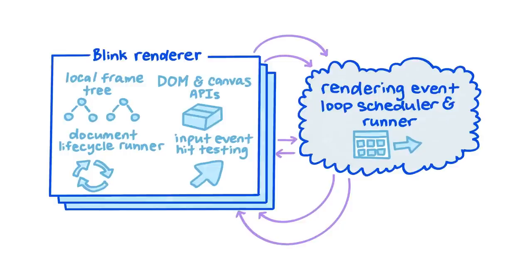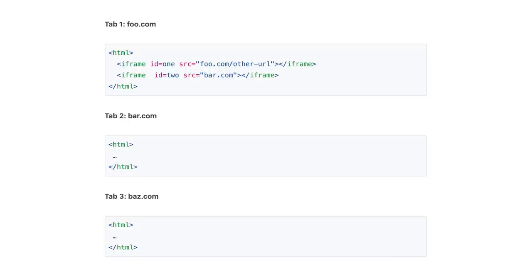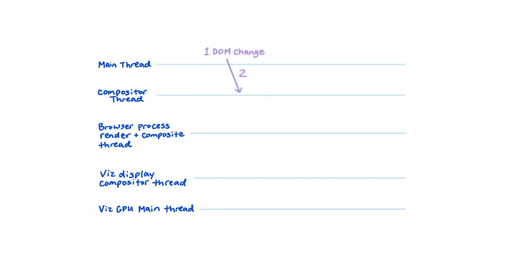There are well-defined components within each thread and process to access all of the web platform APIs, process input from touch devices, mice, and keyboards, and schedule work efficiently and fairly. The renderer main thread has the DOM APIs with which you may be familiar and also runs JavaScript. The render compositor thread runs animations, handles input, and composites and rasters content. Here is an example set of pages and iframes — let's see how that example maps to these concepts in practice, including CPU processes and threads and how the rendering pipeline flows through those components.